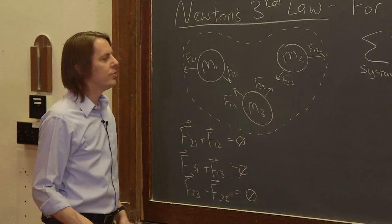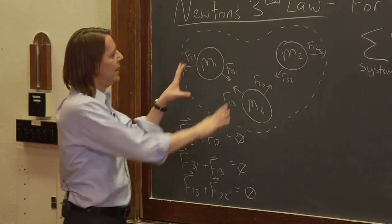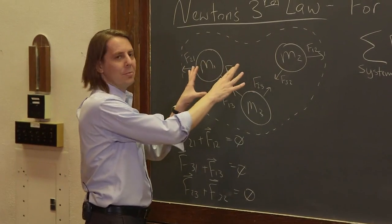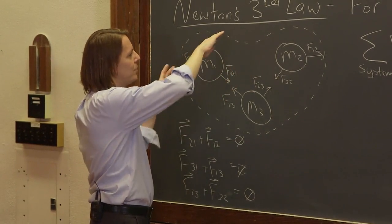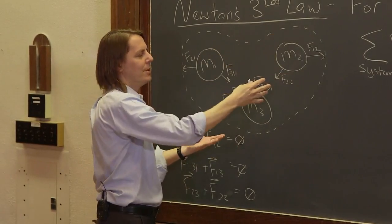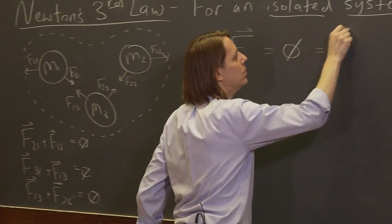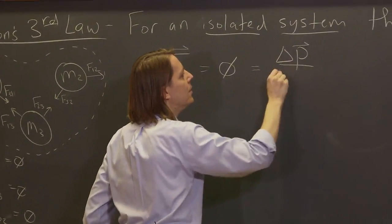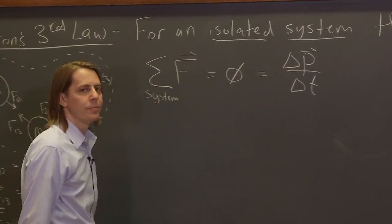That's what it's saying. But then, we could also say, according to Newton's second law, that all these things together have some momentum. As long as we consider the momentum of everything in the system, that has to be equal to delta P over delta T.